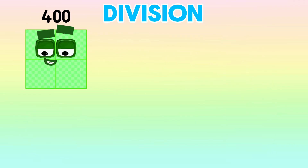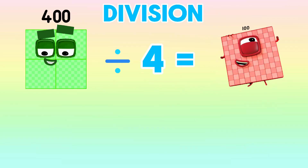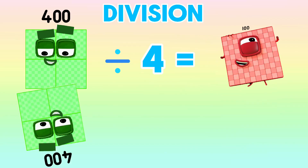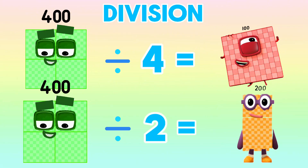400 divided by 4 is equals to 100. 400 divided by 2 is equals to 200.